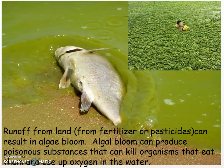The next way is from runoff. Runoff from land from things such as fertilizers or pesticides can result in algae bloom. If you look at the picture of the little boy in the water, he is in the middle of an algae bloom. Algae bloom can produce poisonous substances that can kill organisms that eat them and deplete oxygen in the water.